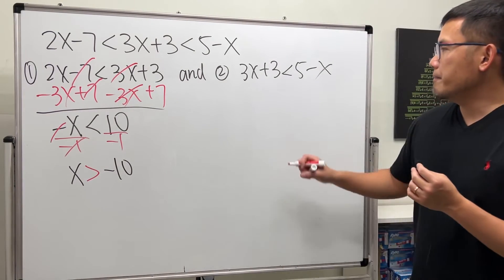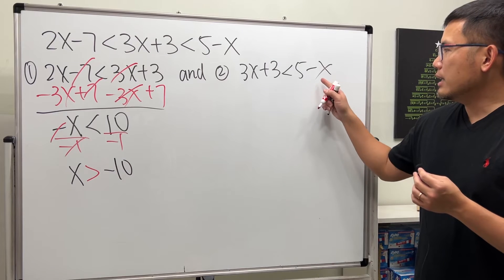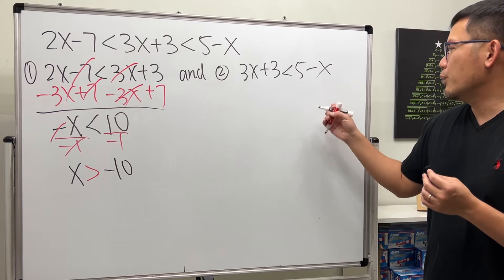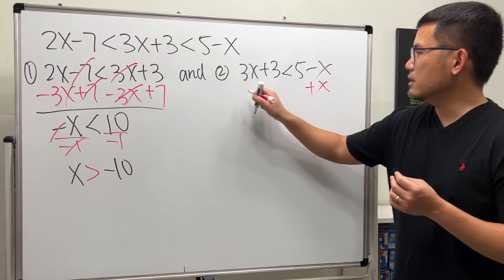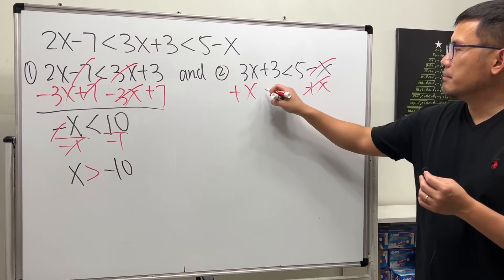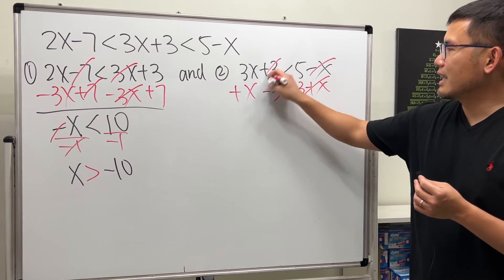For the second one, do the same thing. I like to bring the x to the left-hand side. So I would like to just add x on here, here, cancel. Minus 3, minus 3, cancel.